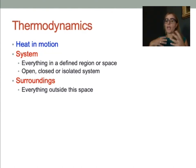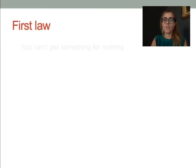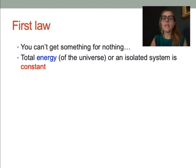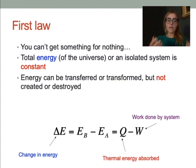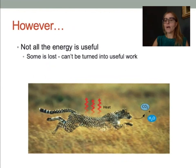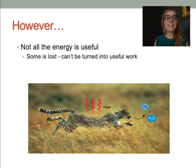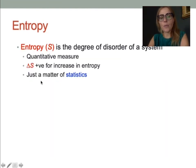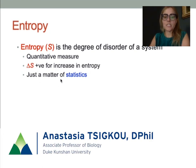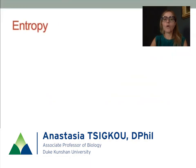If there is an exchange of both energy and matter with the surroundings, it is an open system — and we are an open system. This is all about the first law of thermodynamics: you can't get something for nothing. Energy can never be created or destroyed, only transferred or transformed. However, not all energy is useful; some will be released as heat. Entropy is disorder, measured by delta S, and it increases in the universe — that is the second law of thermodynamics.